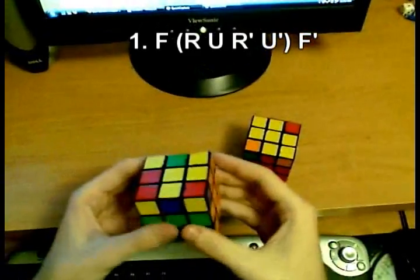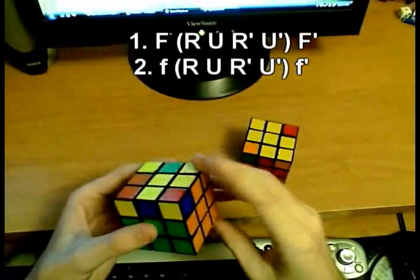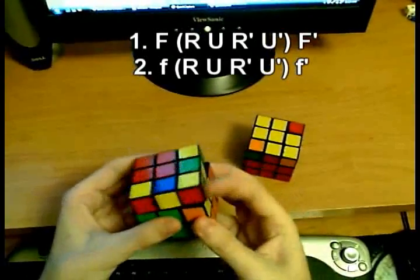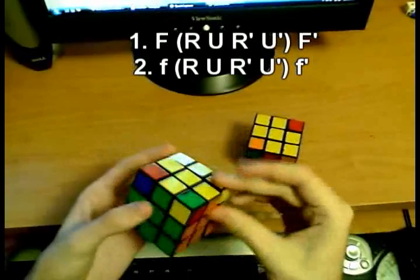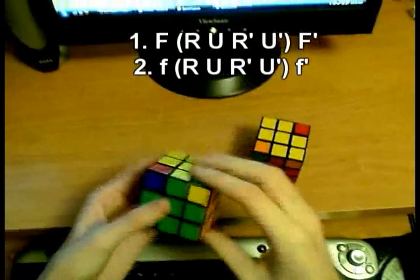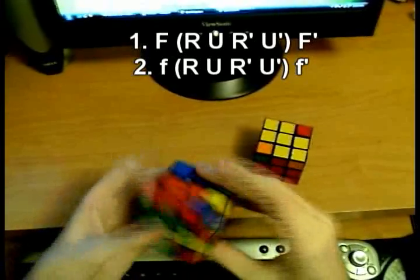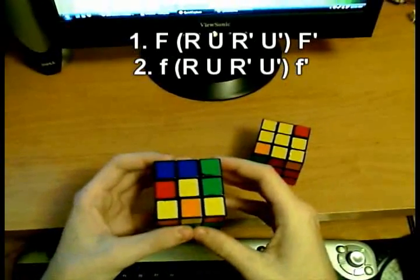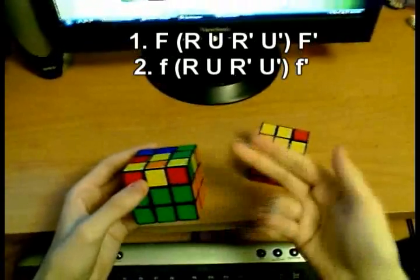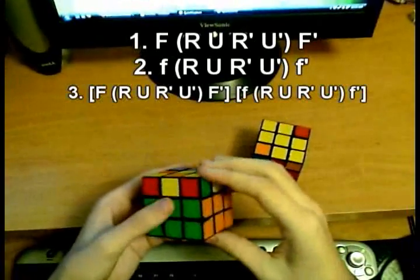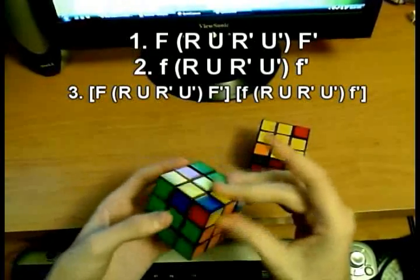If you have this case, do a very similar-looking algorithm: small f R U R' U' small f'. In the last case, you can have none of the edges oriented correctly, and in that case just do the first algorithm followed by the second algorithm.